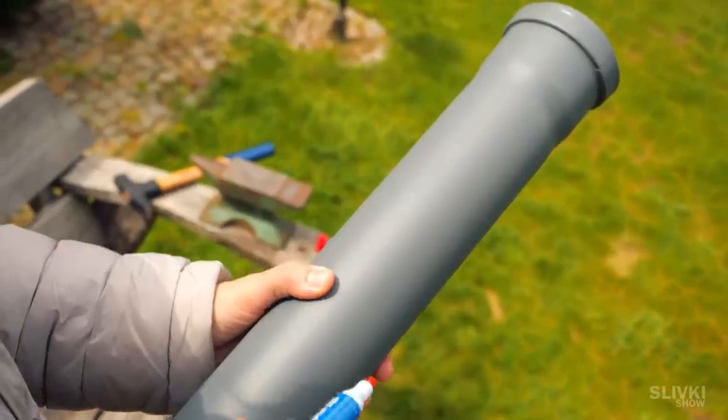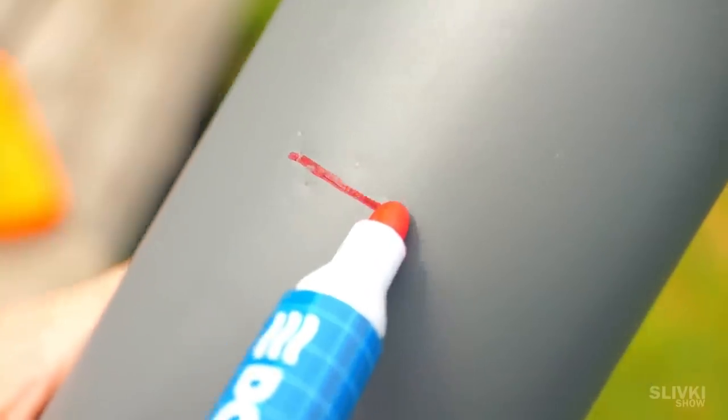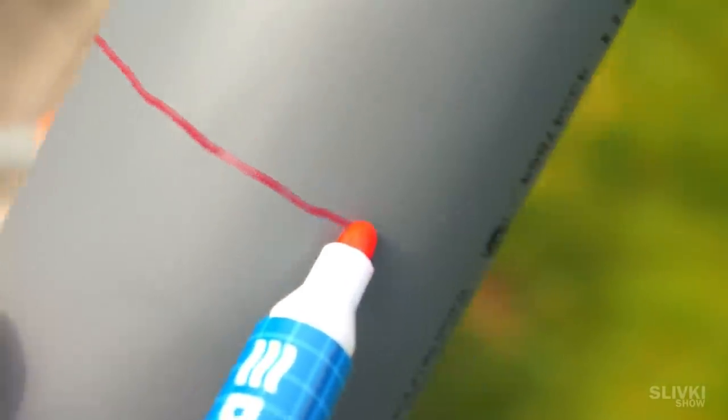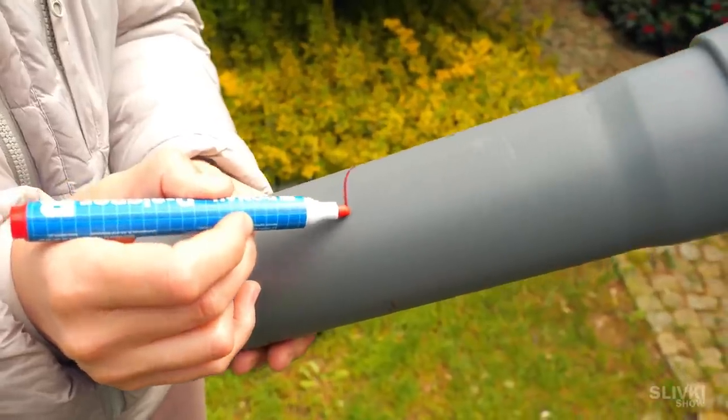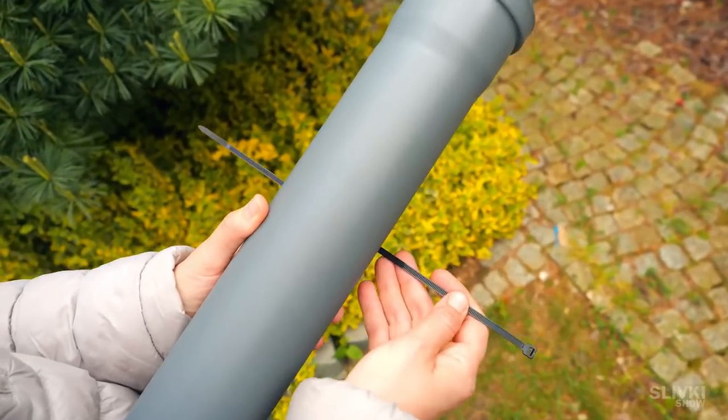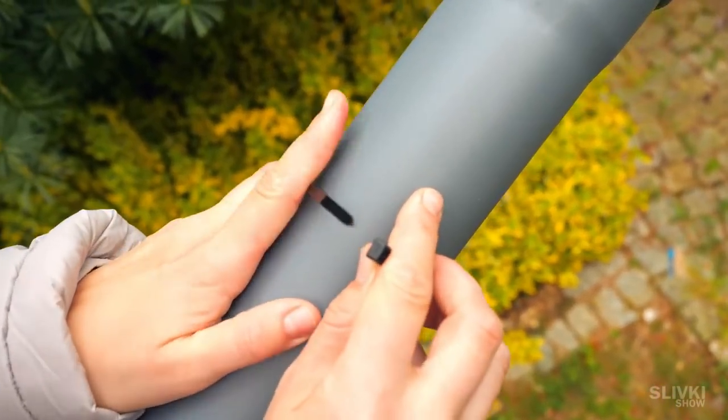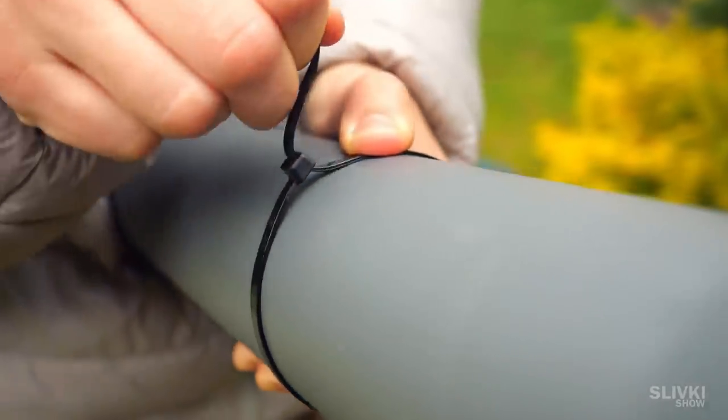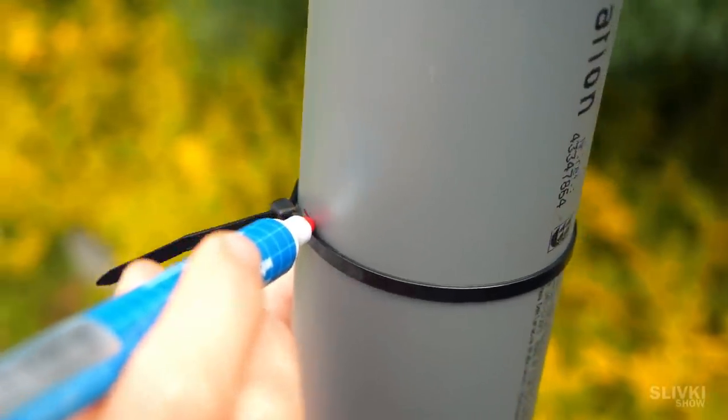If you want to cut a piece of pipe evenly you need to mark it but doing it by hand doesn't make it straight at all. On the internet I found a way to do it with a cable tie. You need to fix it on the pipe and tighten it. Then use a marker to draw a line pressing it up against the edge of the cable tie.